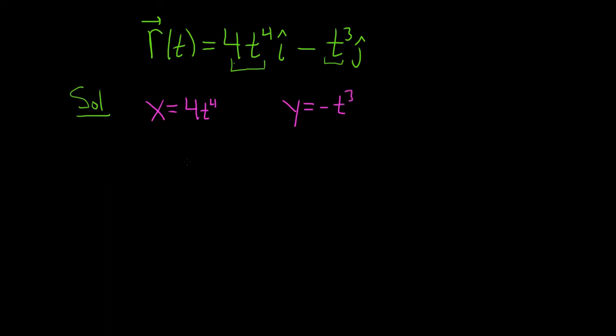The next thing we do to find out where it's smooth is we take the derivative, so x prime. 4 times 4 is 16, so 16t cubed. Over here y prime would be equal to, you put the 3 in the front, so that's negative 3t squared, because you subtract 1.